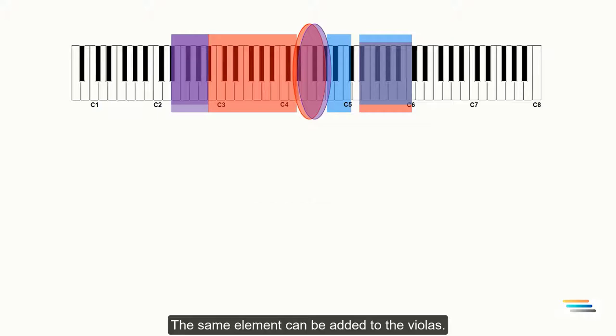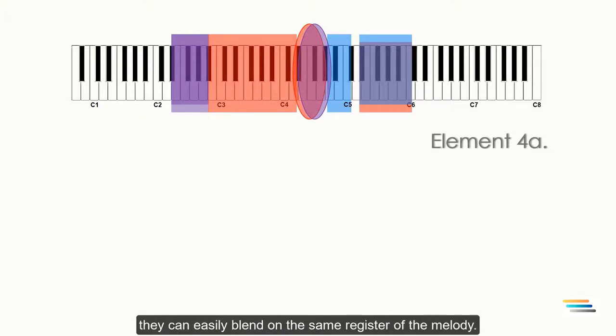The same element can be added to the violas. Since the violas have a dark timbre, they can easily blend on the same register of the melody.